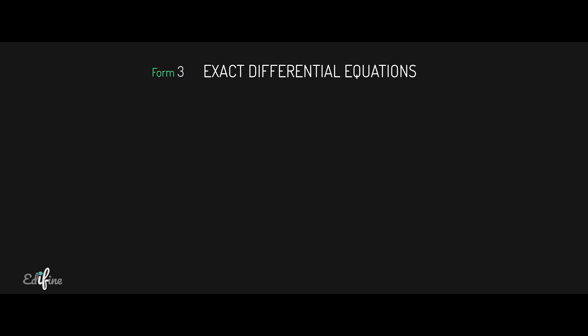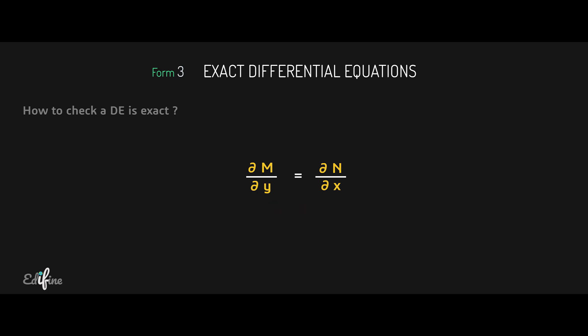Now, how do we check whether a differential equation is exact? A differential equation is said to be exact if it satisfies the condition ∂M/∂y = ∂N/∂x. Here, ∂M/∂y means differentiating M partially with respect to y keeping x constant, and ∂N/∂x means differentiating N partially with respect to x keeping y constant.